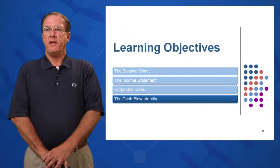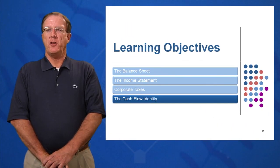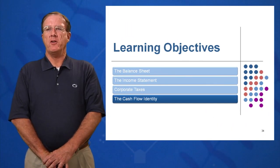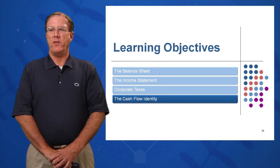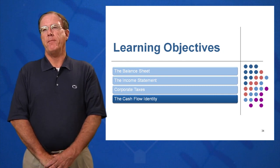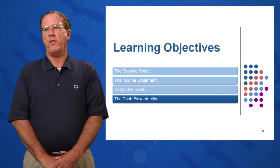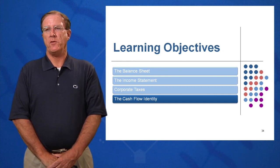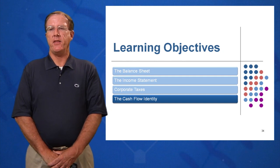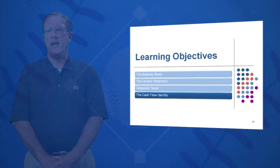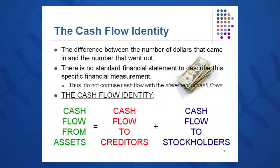Learning objective four in session two: you want to be able to understand cash flow. This may be the most valuable of the three identities. We've gone over the balance sheet identity, the income statement identity, and now the cash flow identity. In small businesses, cash flow is king. You'll hear that terminology said quite a bit — it's so critical.